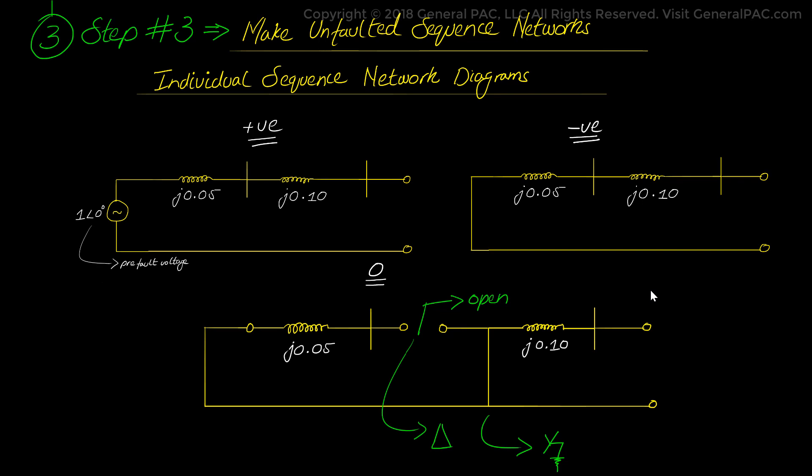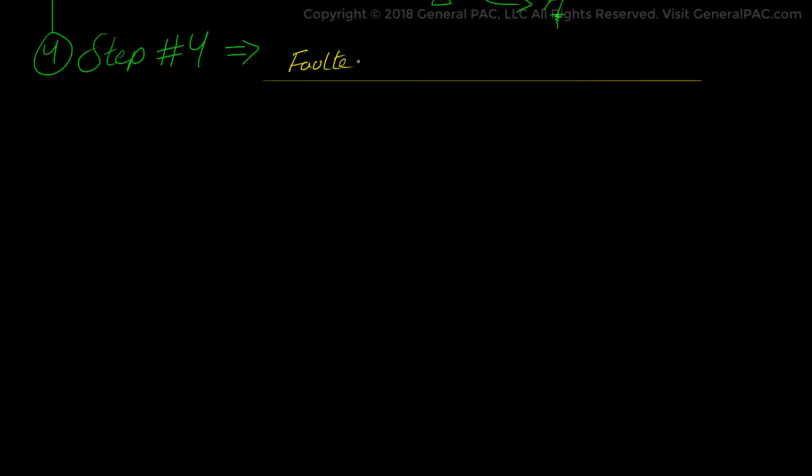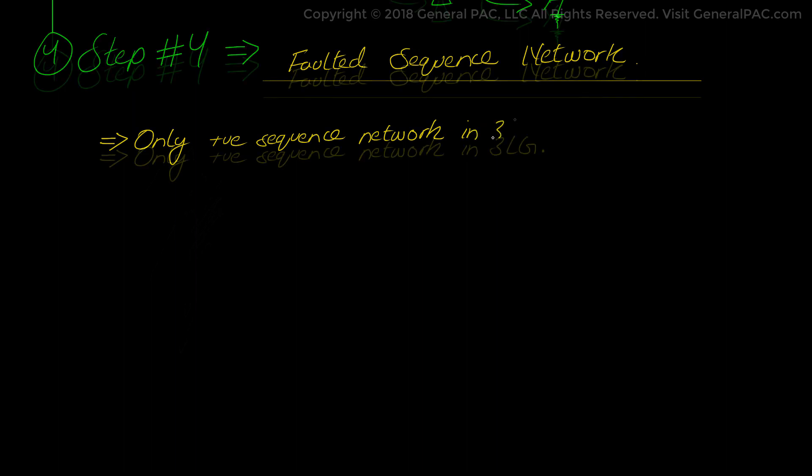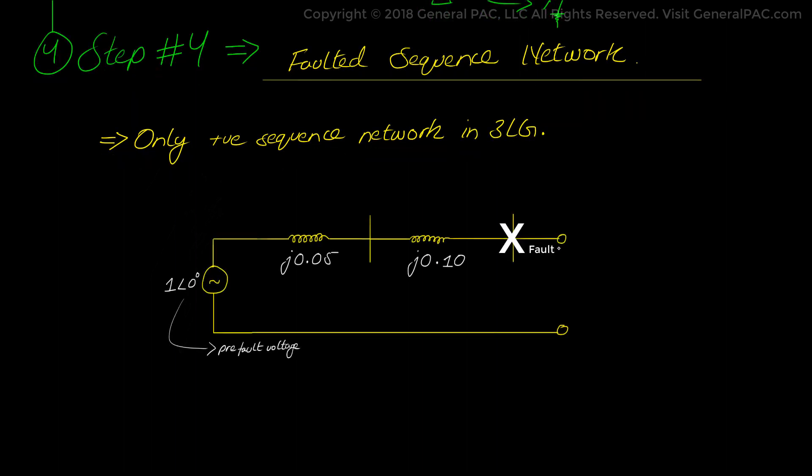And then in step number 4 we will draw the faulted sequence network which is interconnected based on the type of fault that we have. So given that this is a 3-line to ground fault which produces only positive sequence current and voltage quantities,